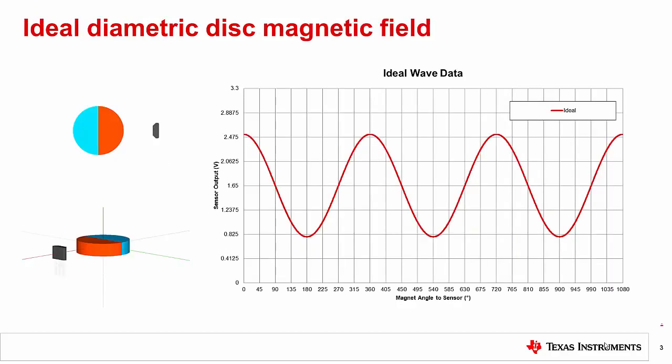With an ideal angle measurement system, a diametric disc magnet will rotate with its axis of rotation at its center. In this ideal system, a nearby linear hall sensor will produce a perfect sinusoidal output.